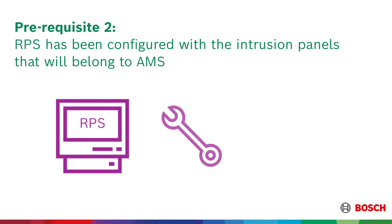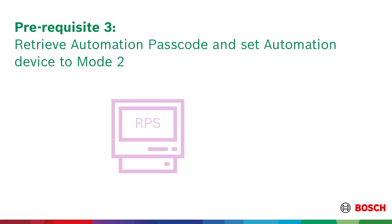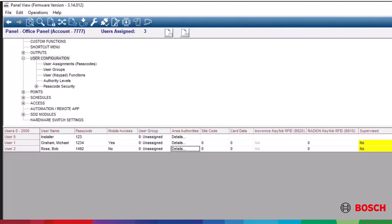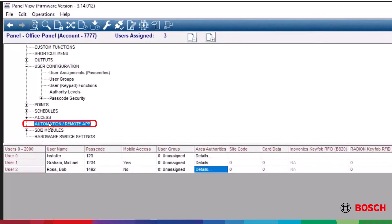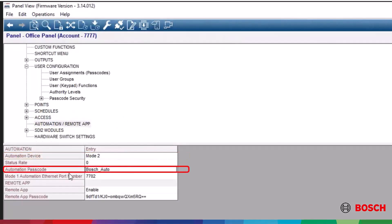Prerequisite 2: RPS has been configured with the intrusion panels that will belong to the AMS access control system. The intrusion panels have IP addresses and need to be on the same network as AMS. Prerequisite 3: You will need your panel automation passcode. The automation device should be set to Mode 2. To do this, go to Automation/Remote App, and in the field for Automation Device, select Mode 2. The automation passcode is also found in this menu.